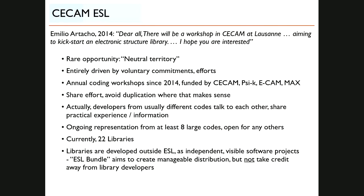It has at least eight large codes that were shown on the slide before, but there are actually more that use the software. The number of libraries in the bundle, which is the distribution, is currently 22. These libraries are developed mostly outside the ESL — the idea is that they are independent, visible software projects. So the ESL bundle tries to create a manageable distribution but not to take credit. For instance, we should really look at the COSMA library — I was not aware of the development, and thanks to Anton for pointing that out. This is the kind of thing that the ESL tries to be: it does not try to take credit away.